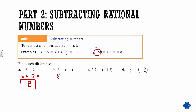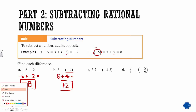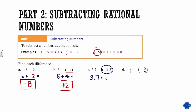We can rewrite 12 minus negative 4 as addition: the opposite of negative 4 is positive 4, so it's 12 plus 4, which gives us 16. Next: 3.7 minus negative 4.3 becomes 3.7 plus positive 4.3. Both signs are positive, so our answer is going to be positive. Adding: 7 plus 3 gives 10 — carry the 1 — and we end up with 8.0, which has to be positive.